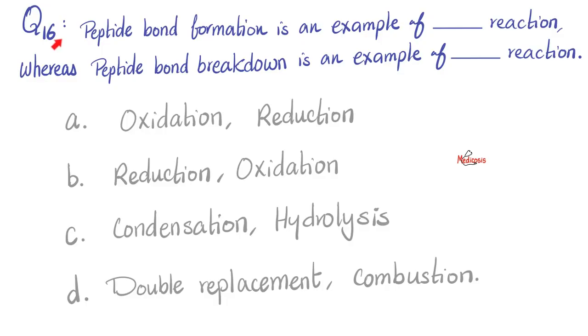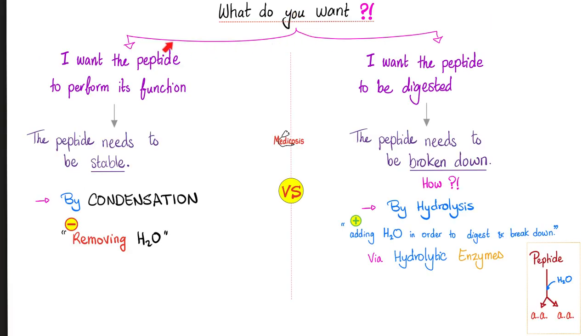Question 16, because the previous 15 were in previous videos. Peptide bond formation is an example of blank reaction, whereas peptide bond breakdown is an example of blank reaction. Is it oxidation and then reduction, or reduction and then oxidation, or is it condensation, hydrolysis, or double replacement combustion? Please pause and try to answer this yourself.